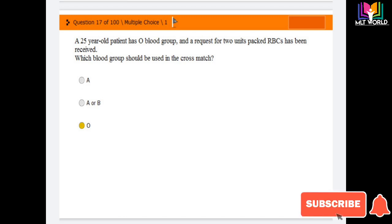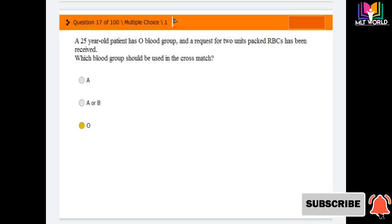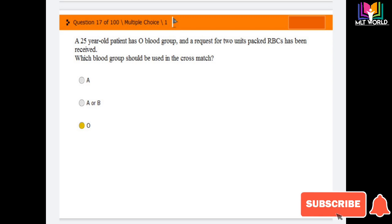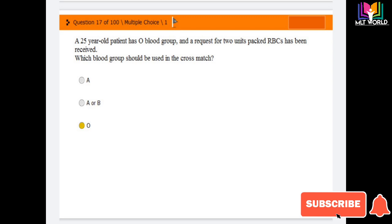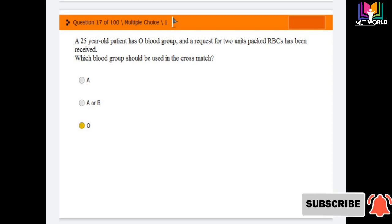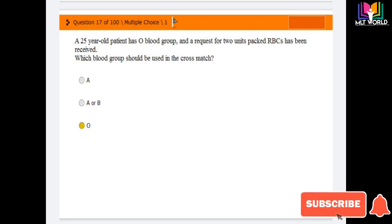Next question: a 25-year-old patient has blood group O and a request for two units of packed blood cells has been received. Which blood group should be used in the cross-match? Options are: A, B, or O. The correct answer is O — O blood group will be used in the cross-match because the patient's blood group is O.